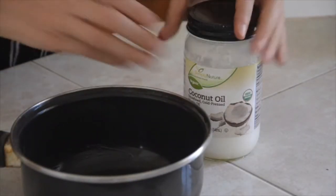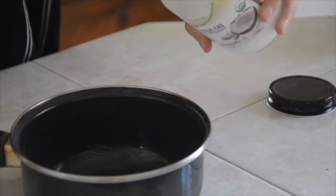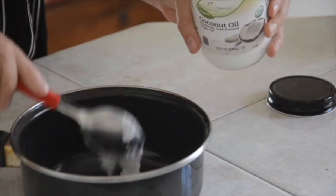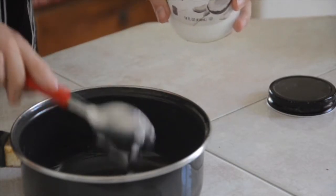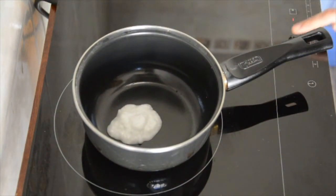First of all we're going to need some coconut oil and we'll start by adding two full tablespoons of it into a pot. Afterwards we melt it and let it rest on medium heat.